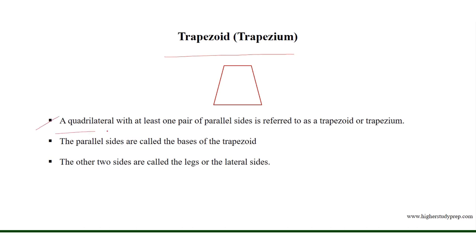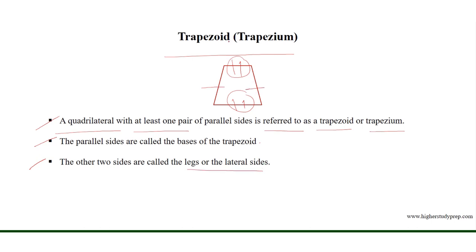A quadrilateral with at least one pair of parallel sides is referred to as a trapezoid or trapezium. The parallel sides are called the bases of this quadrilateral, and the other two sides are called legs or lateral sides.